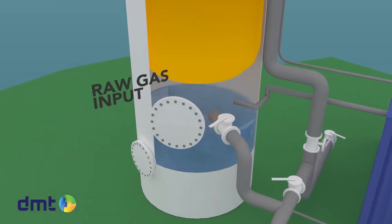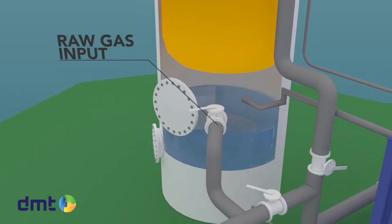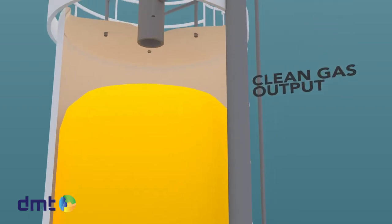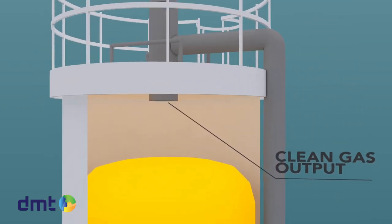The raw biogas enters the Sulphurex column at the bottom and flows upwards through the Paul rings and leaves the column at the top with strongly reduced H2S levels.